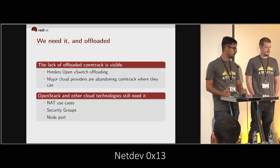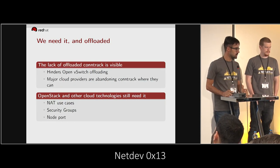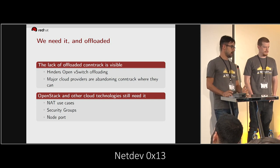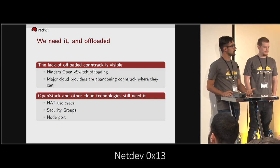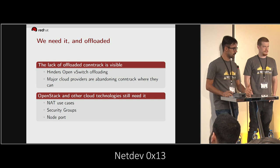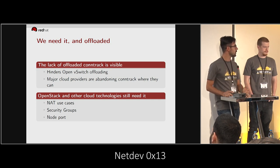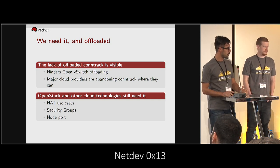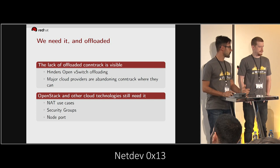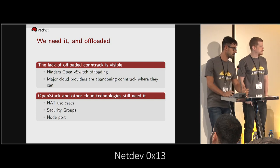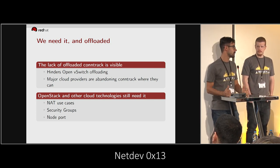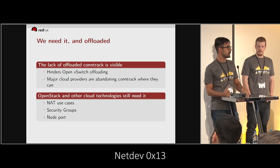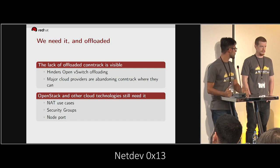So we need it, and we also need it offloaded because the lack of it is going to be hindering the Open vSwitch offloading adoption. We have information that major cloud providers are abandoning conntrack where they can because it cannot be offloaded and they need the speed, they need the performance.